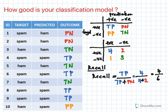Another metric you can measure is precision. If you look carefully, it's a derivative of recall in that sense — but the definition is different. Precision is: out of all the positive classes that you have predicted correctly, how many are actually positive?